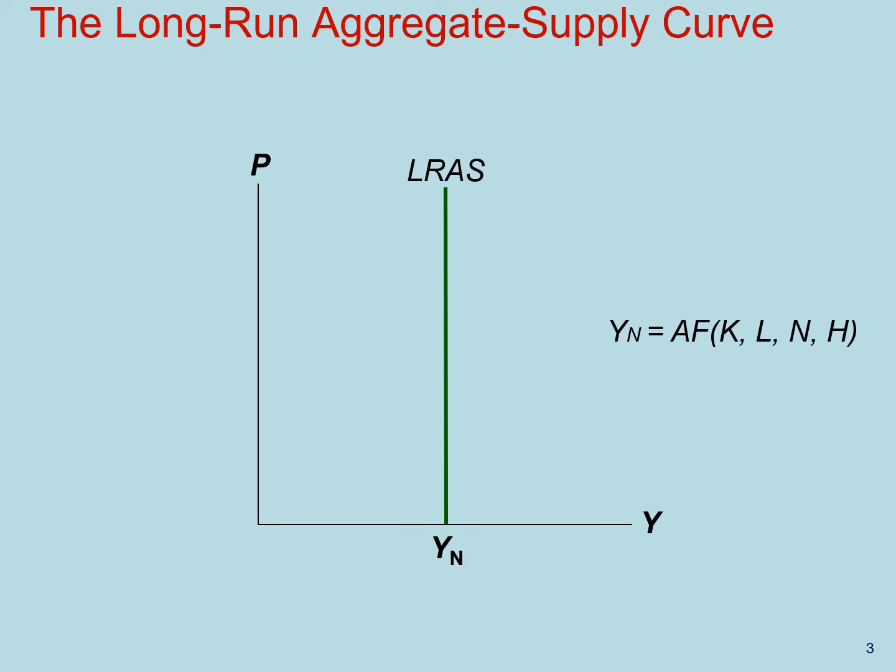The natural rate of output, YN, is the amount of output an economy produces when unemployment is at its natural rate. It's also called the potential output or full employment output, and is determined by the amount of factors of production we use and how we use them, our productivity.